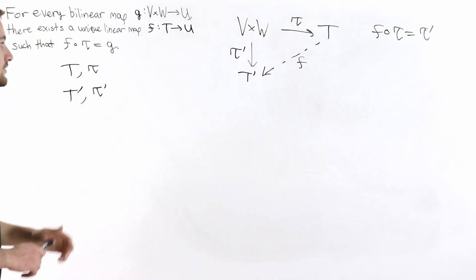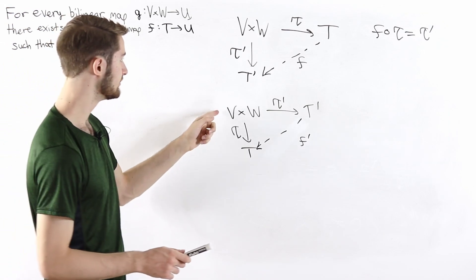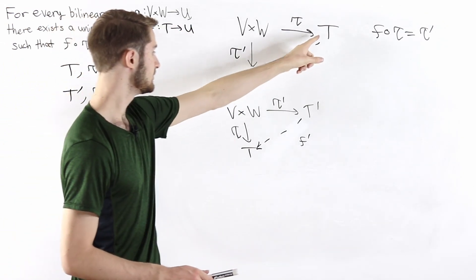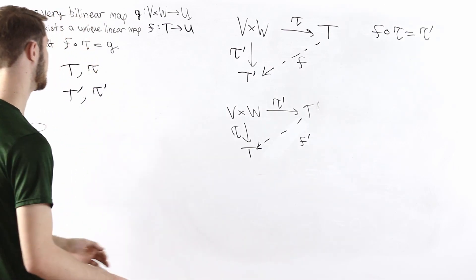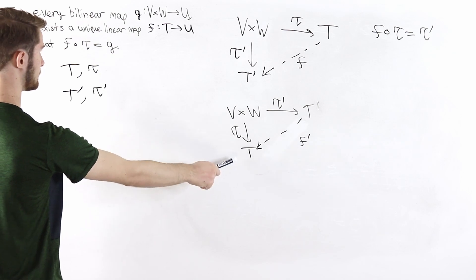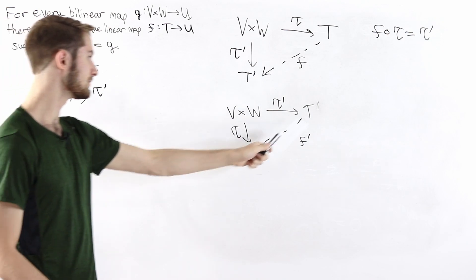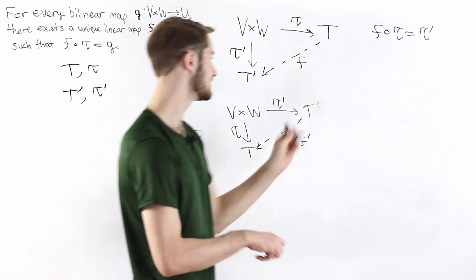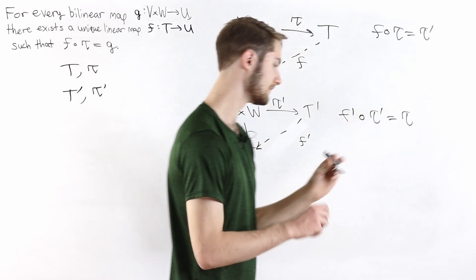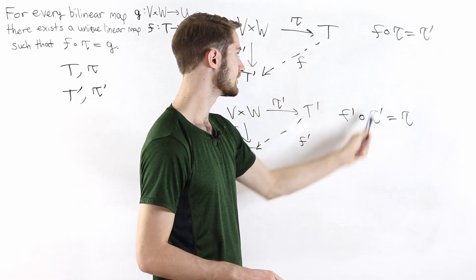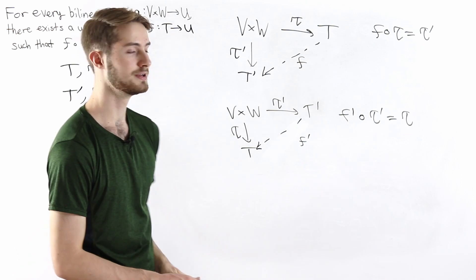We can do the same thing with T and T prime switched. Using tau as the bilinear map and T as the target, the universal property gives a unique linear map f prime from T prime to T such that f prime composed with tau prime equals tau.